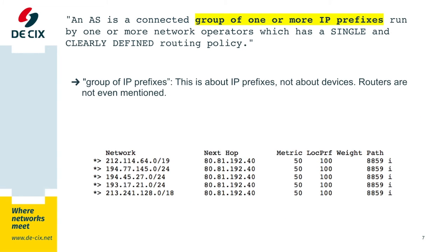The next part: a group of IP prefixes. Please note we are not talking about routers here. The definition goes to the IP prefixes, the network prefixes. The reason for that is you don't have to use a router. You can also run an autonomous system on a virtual box, on a virtual machine inside another virtual machine. So mostly it's run on routers, but it doesn't have to be. It's about the IP prefixes which are grouped together in an autonomous system.